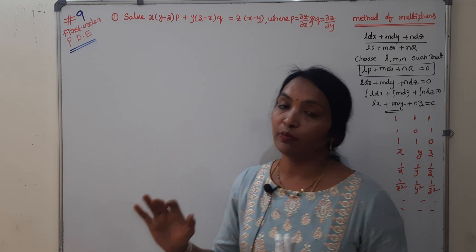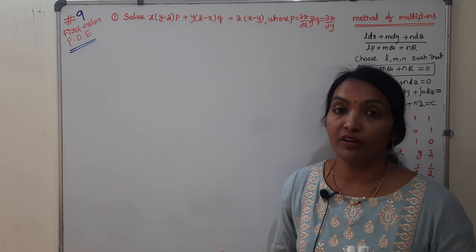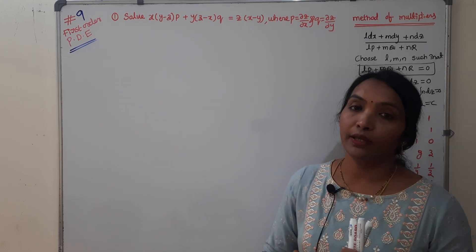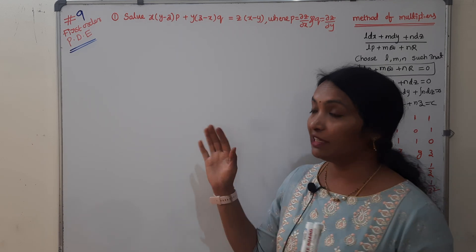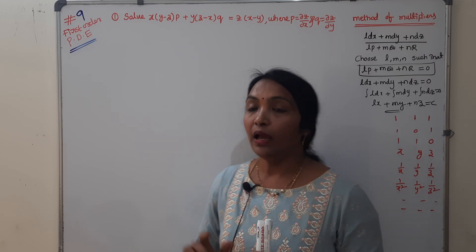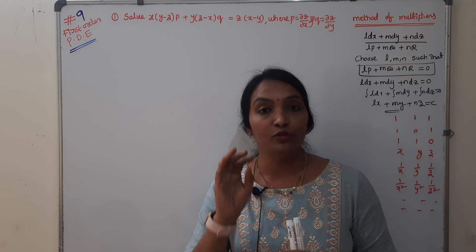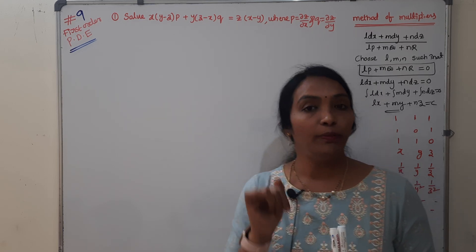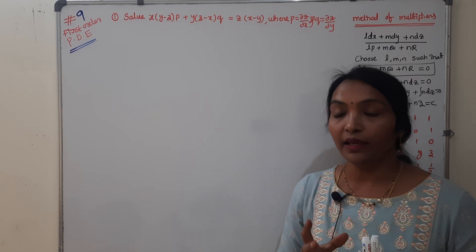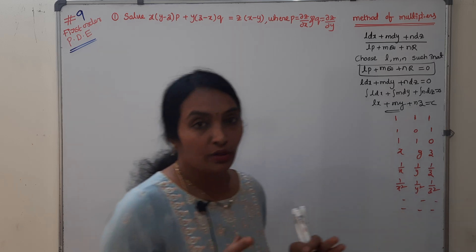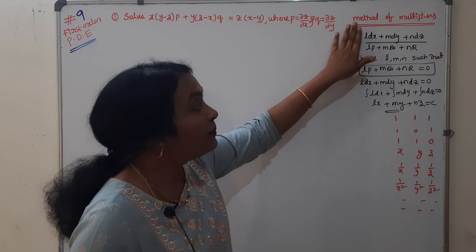We have covered order, degree, types and formation of partial differential equations, including linear and non-linear. We have a linear equation P·p + Q·q = R, that is Lagrange's equation. In the previous video, we used the method of grouping. In the linear equation, we use two methods in Lagrange's formula: the method of grouping and the method of multipliers.